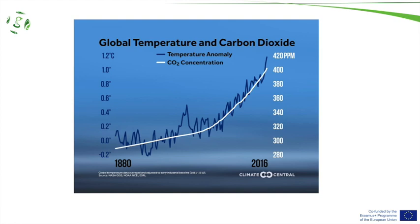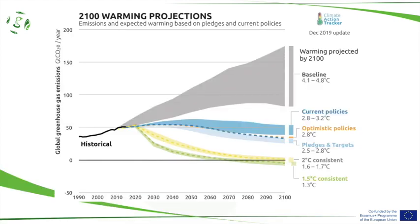This concentration is correlated with a temperature increase, and this correlation also means causality. We know that this CO2 is produced by human activity. If we continue the same way we are using resources, we're going to see a warming of four degrees. Currently we're at one degree, and we already see things happening — more droughts, more fires — and the ice is melting at a faster rate than the IPCC, the Intergovernmental Panel on Climate Change, had thought it would.